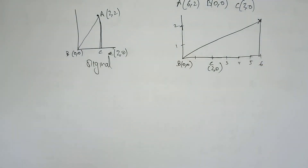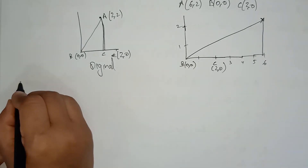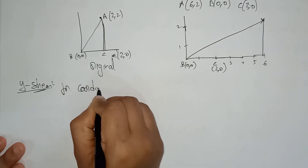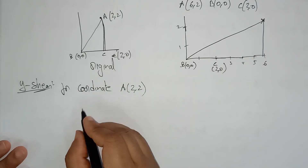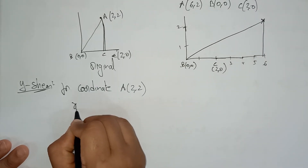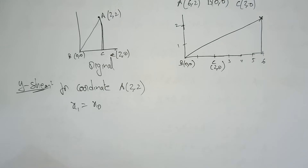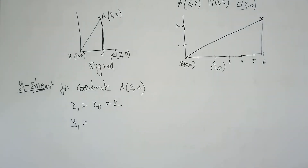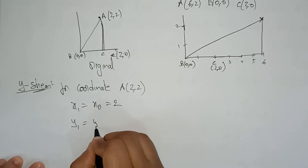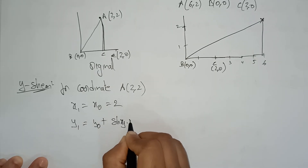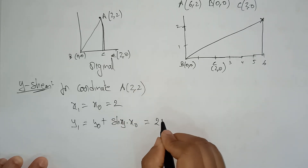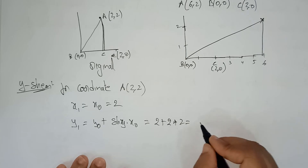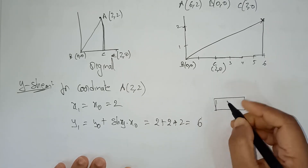Now let's look at the y-shear. For coordinate A (2,2), let the new coordinates be (x1, y1). In y-shearing, the x-coordinate remains the same, so x1 = 2. The formula for y1 is: y1 = y0 + SHy × x0. Here y0 = 2, SHy = 2, and x0 = 2, so y1 = 2 + 2×2 = 6. The new coordinates for A are (2,6).